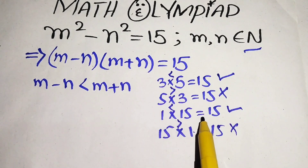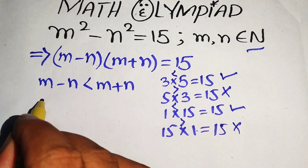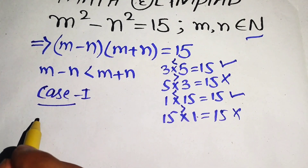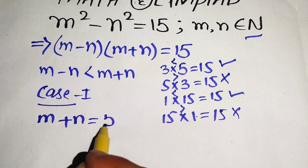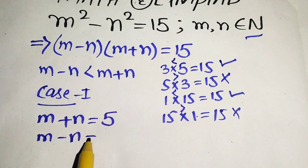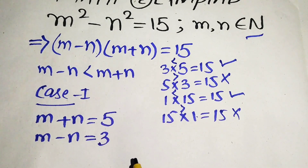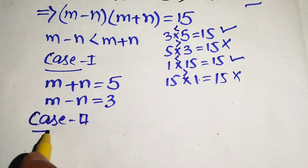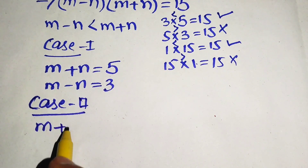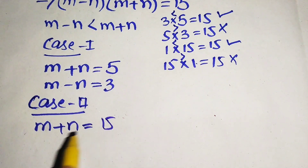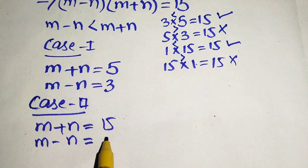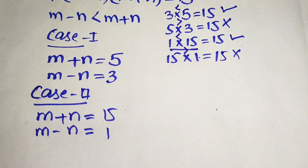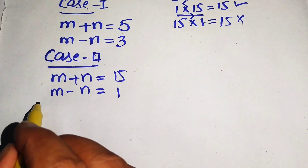So we have two possible cases: (3, 5) and (1, 15). In Case 1, we set m plus n equals 5 and m minus n equals 3. In Case 2, we set m plus n equals 15 and m minus n equals 1.